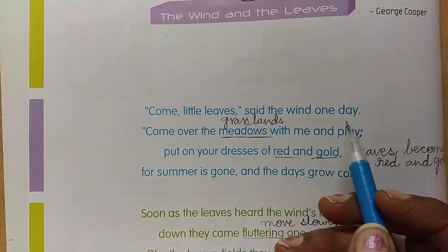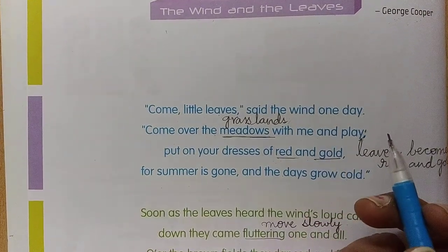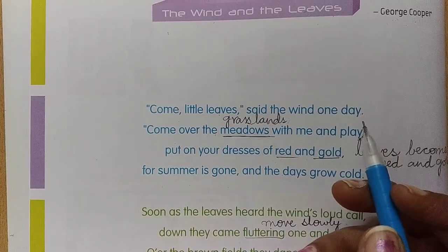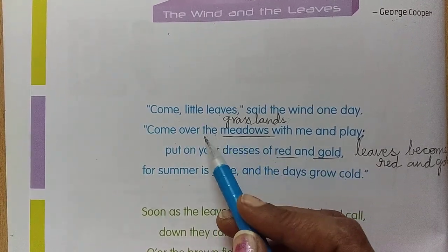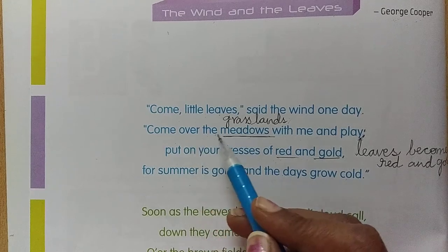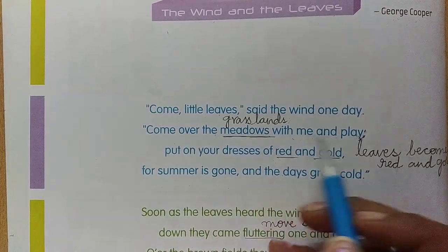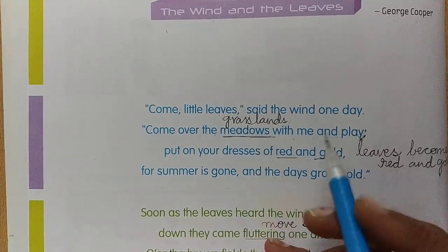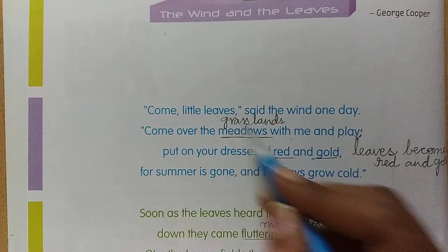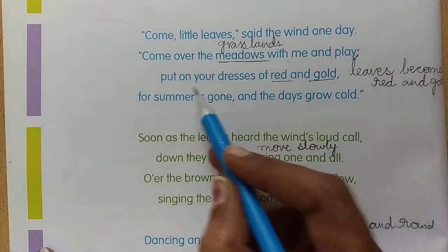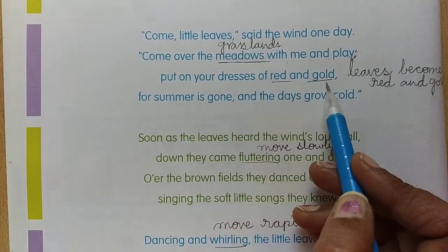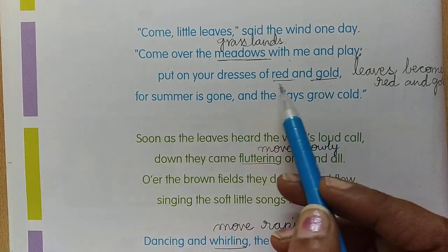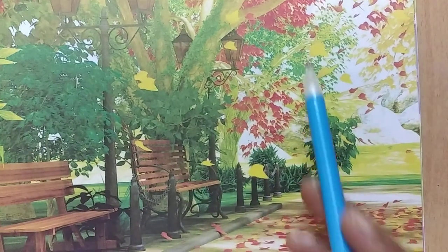Imagine a land, an area without any houses and without any roads, full of green grass. And why is the wind calling the leaves? Come over the meadows with me and play. The wind is calling the leaves to play with the wind. Put on your dresses of red and gold. What are the colors of the leaves? Just now we saw — red and gold.